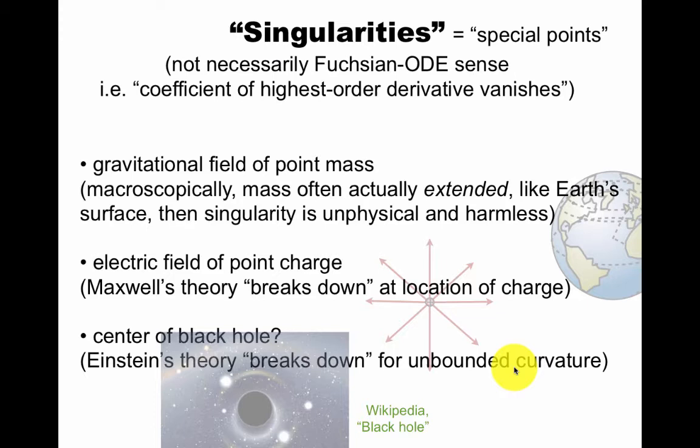So I mean special points when I say singularity, a special point of a vector field. In Fuchsian ODEs, singularity means the coefficient of the highest order derivative vanishes. This could be related to this, but it's not necessarily what I'm talking about here. So what am I talking about?